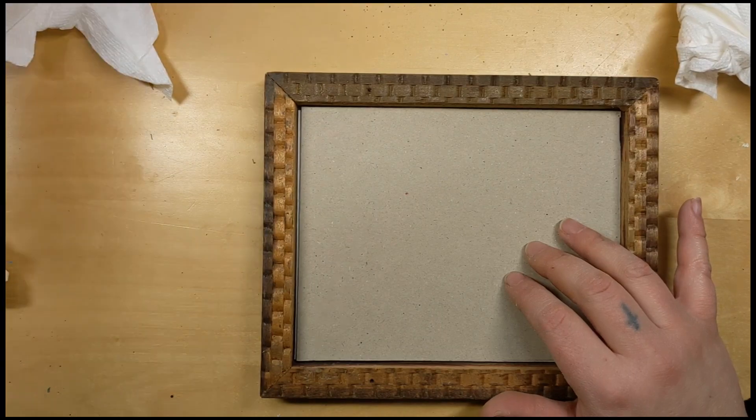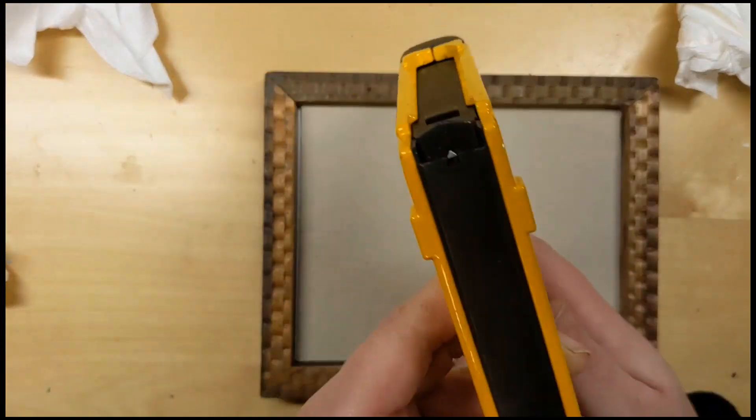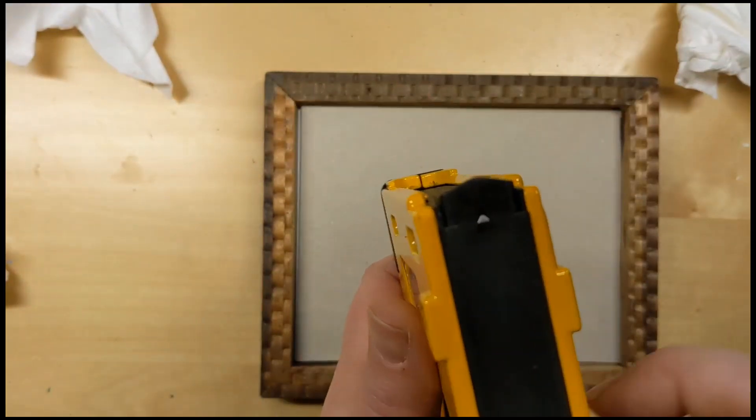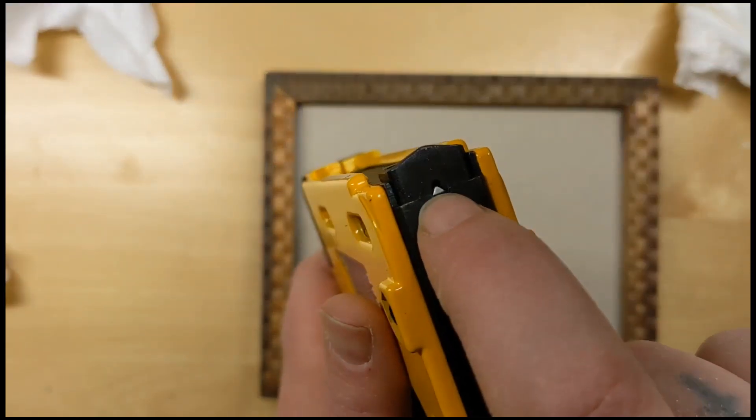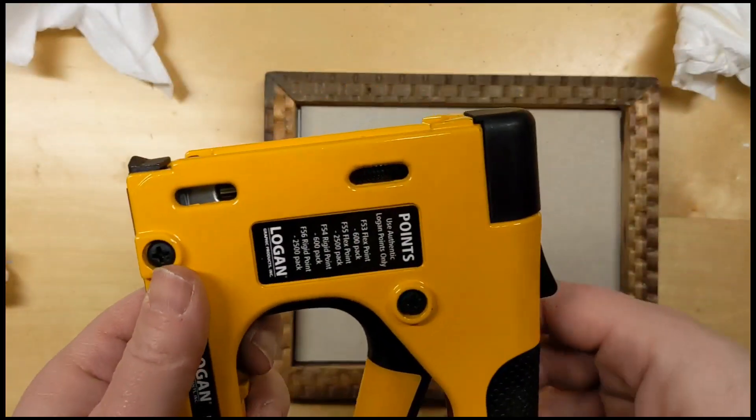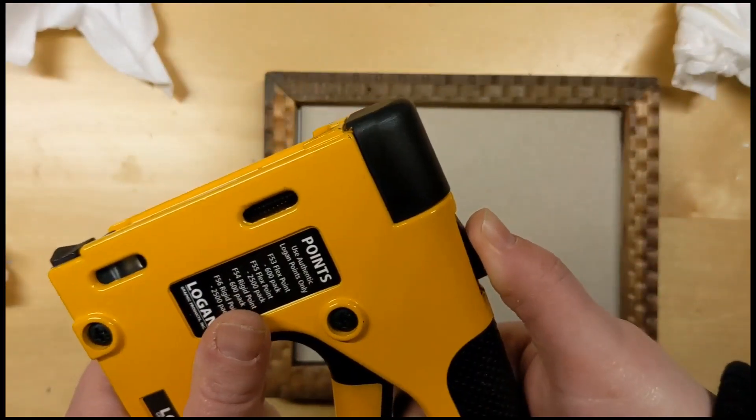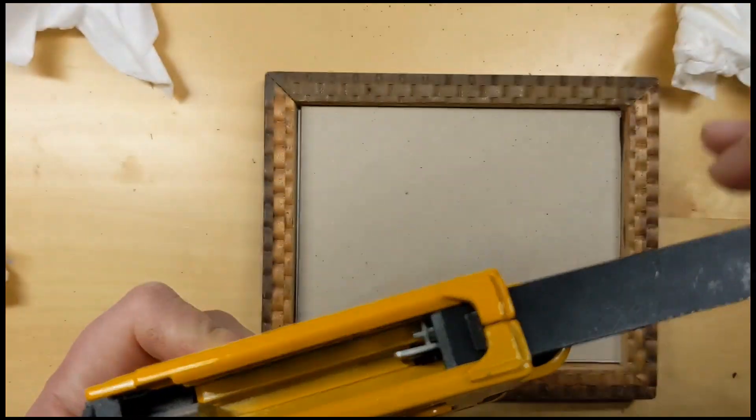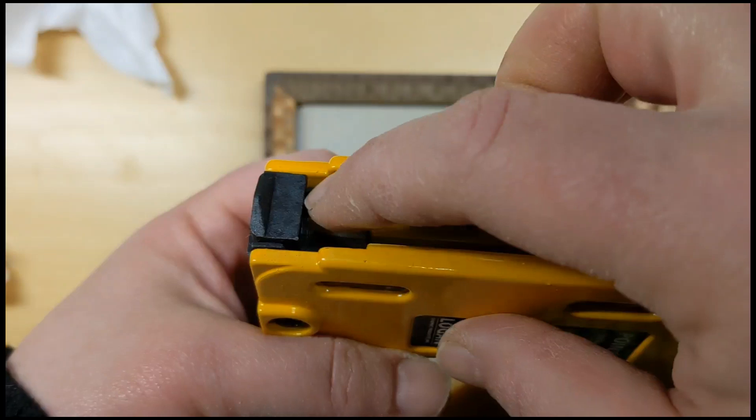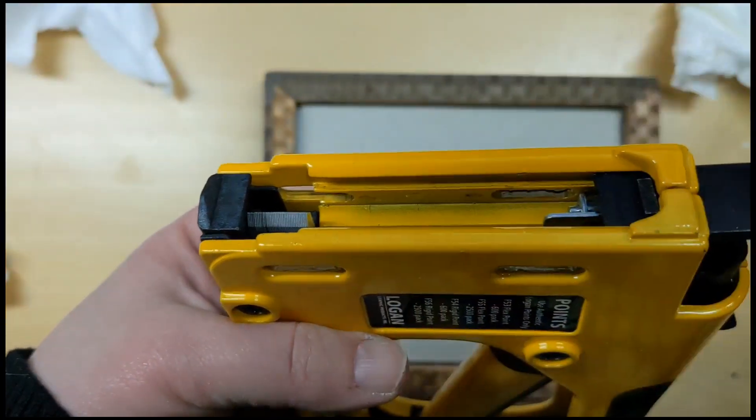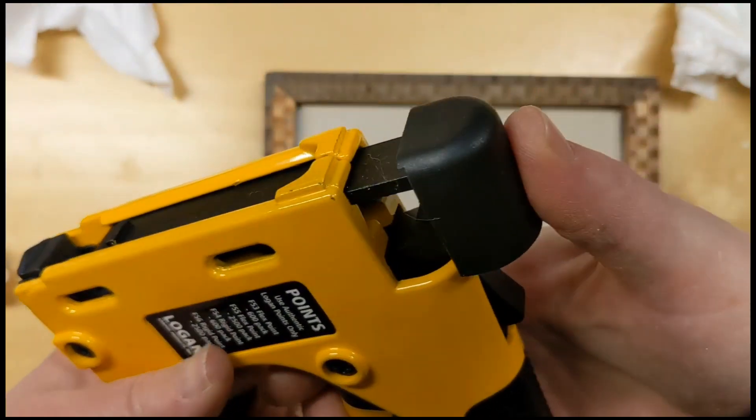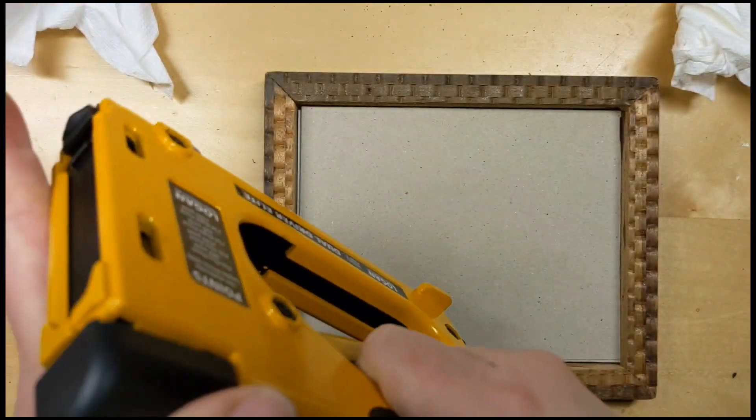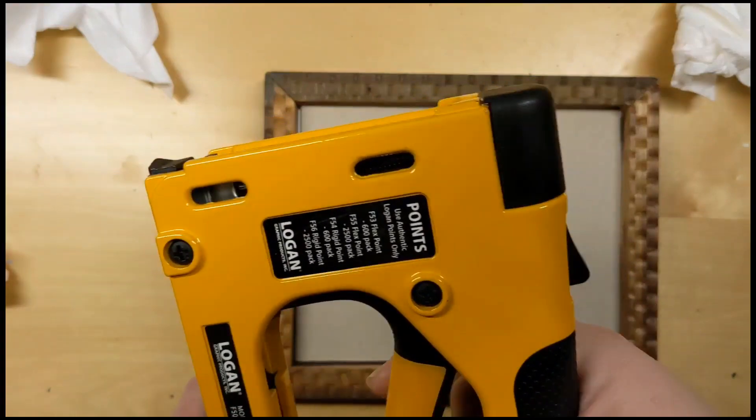Next step is, we get out this gun thing. Like I said, this is a point driver. It has points loaded in it, and you can see them right there. That's the tip of a point. And so, the way that you load points in here is, you press this little thing down on the top, and it opens up this thing, and you can load the points in, so you can kind of see them down there. And then you just slide it closed again.